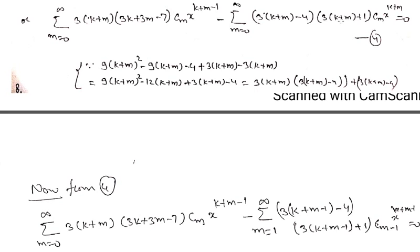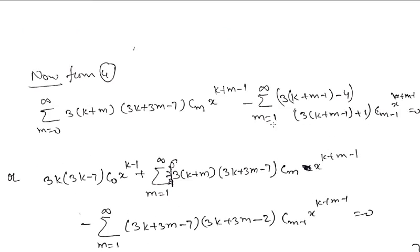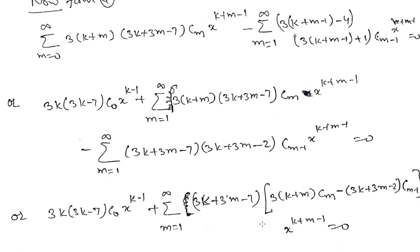When we replace m with m minus 1, the series starting from 0 to infinity now starts from m equals 1 to infinity. The first series starts from m equals 0 to infinity. Taking out the term when m equals 0 separately, it becomes 3k(3k minus 7) c0 x raised to power k minus 1. The rest of the first series runs from m equals 1 to infinity and can be combined with the second series.